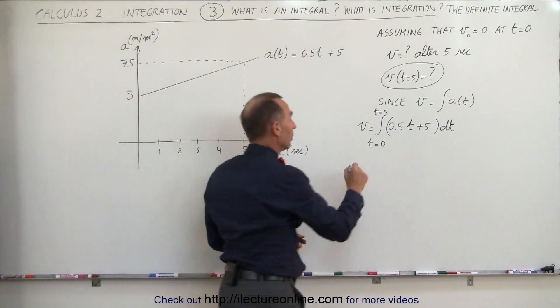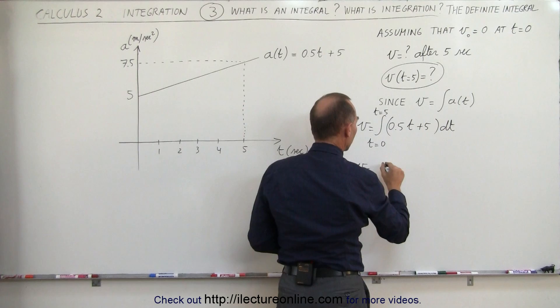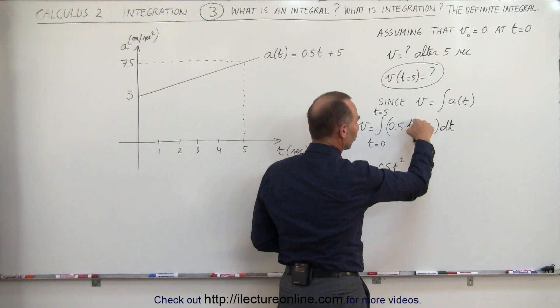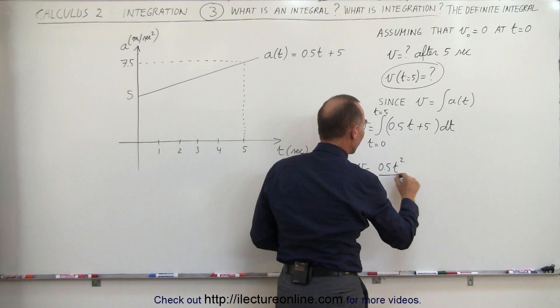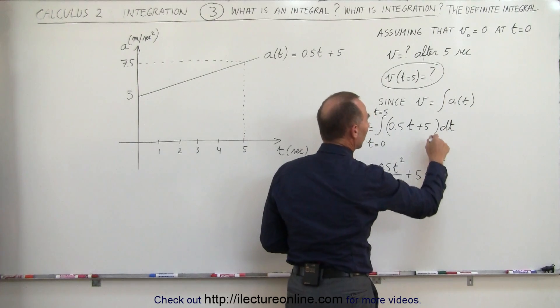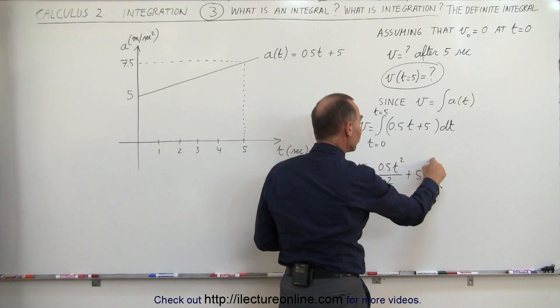First, the integral. Again, v is equal to, let's add one to the exponent, 0.5 times t squared. Set it to the first power. It's now to the second power. Divided by the new exponent, plus 5 times t to the first power, because we had t to the zero power there before, so now we have 5t to the first power.